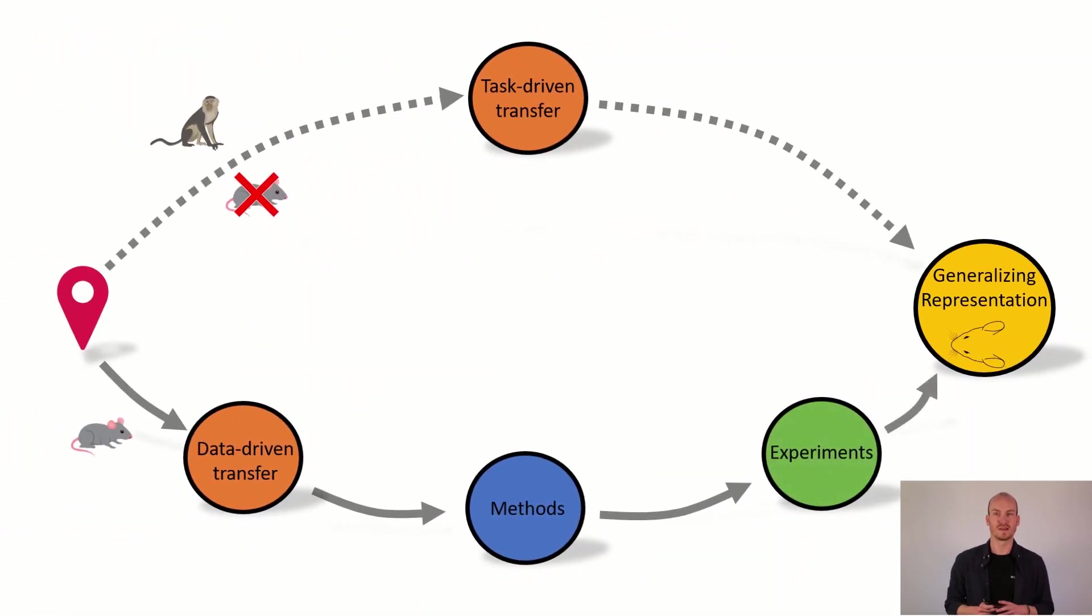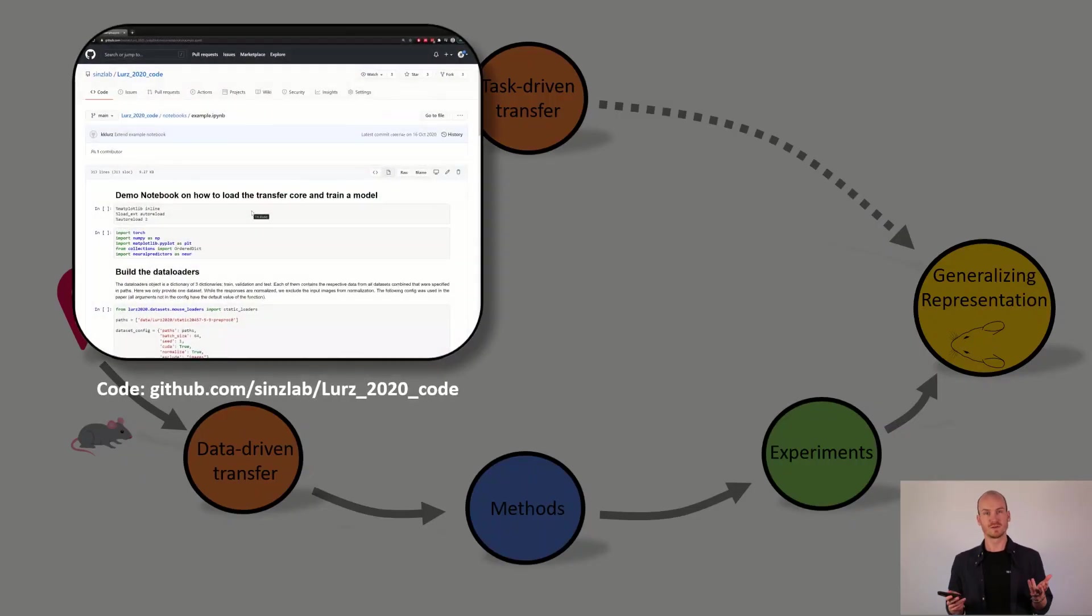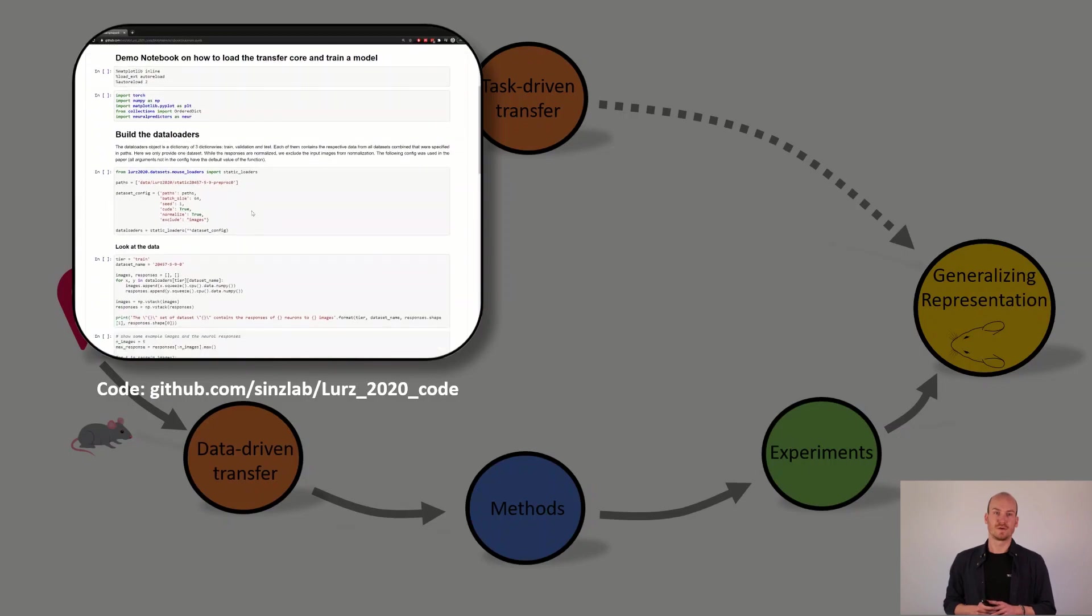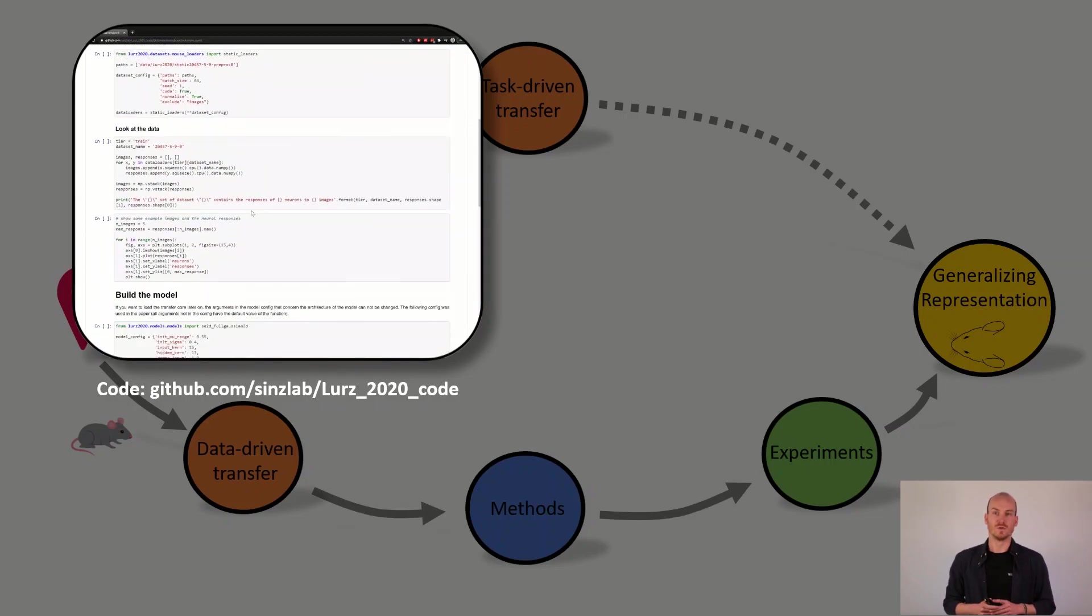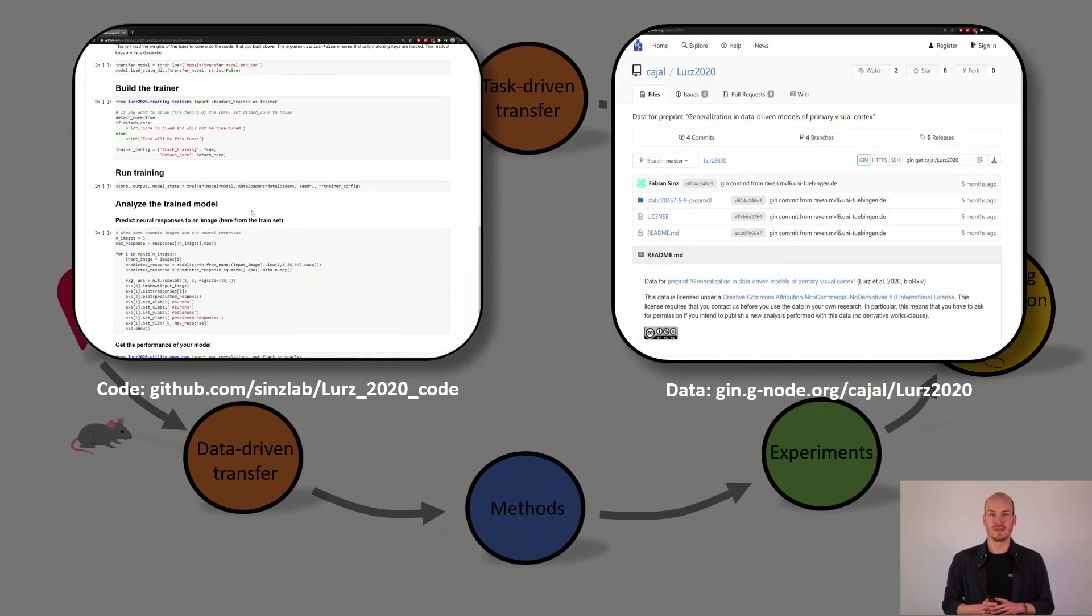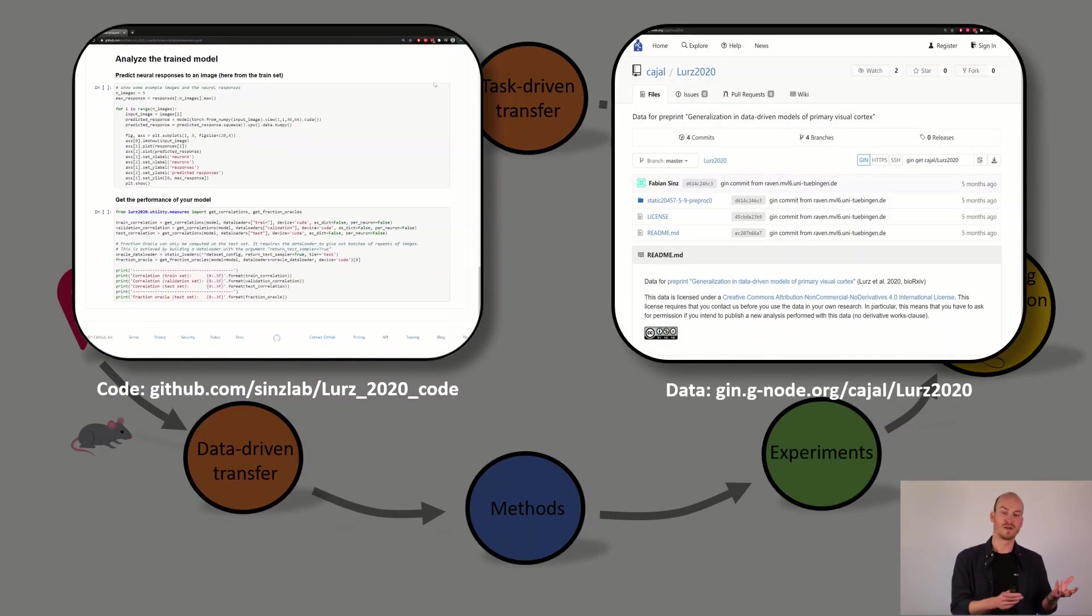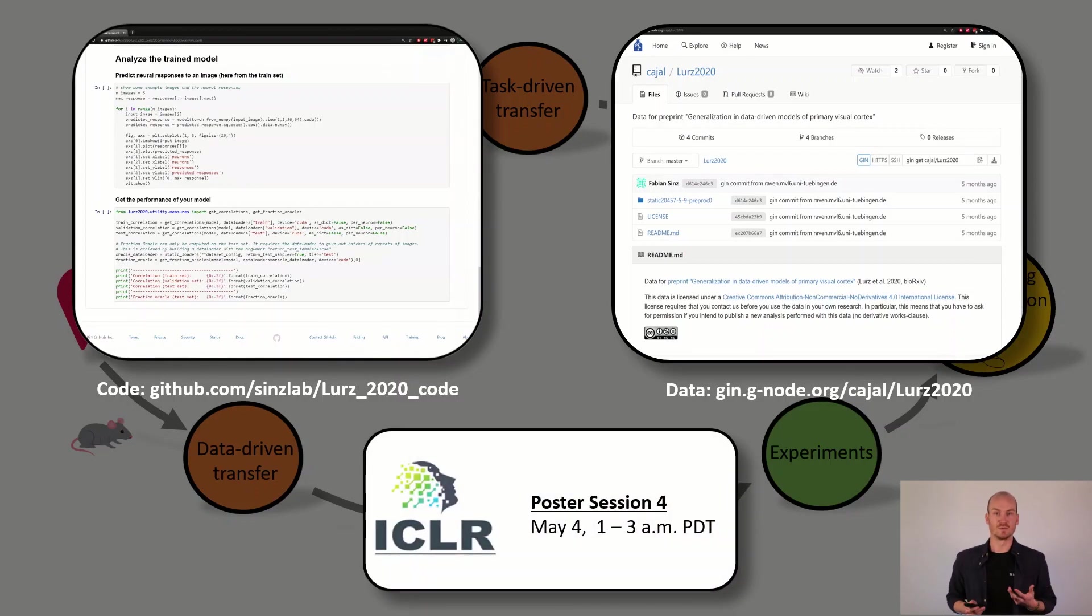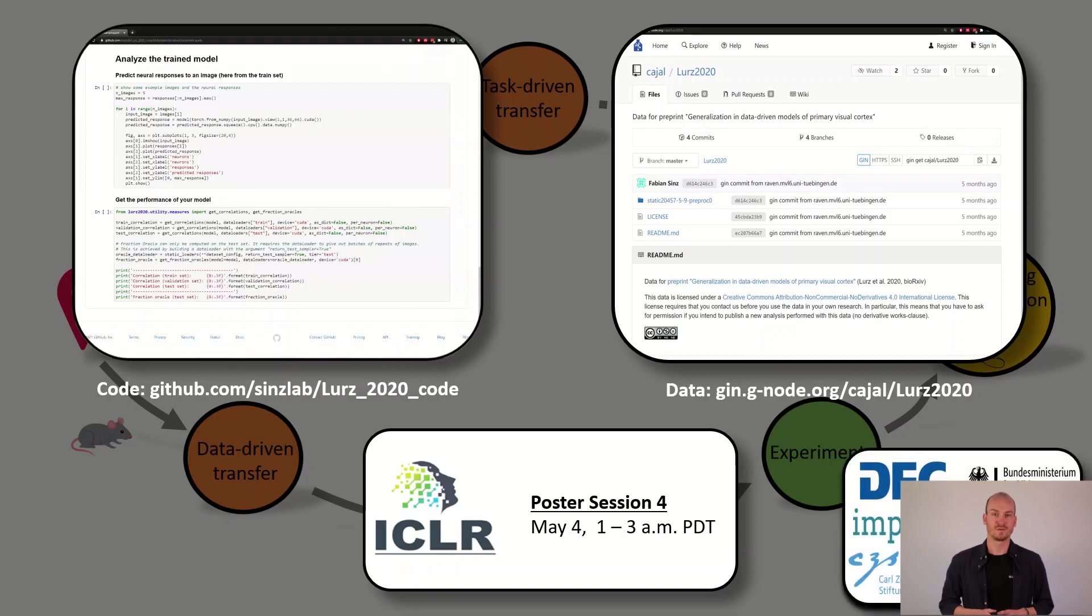So we have successfully gained some generalizing representations of mouse visual cortex. If you're interested in our work you can look at our GitHub page where we provide some code to use our representation on your own experiments. We also provide the data of our transfer dataset so you can compare your own representations with ours and see which one generalizes better. Last but not least I would also welcome you to join us at our poster session on May 4th 1-3 AM PDT. Thank you very much.